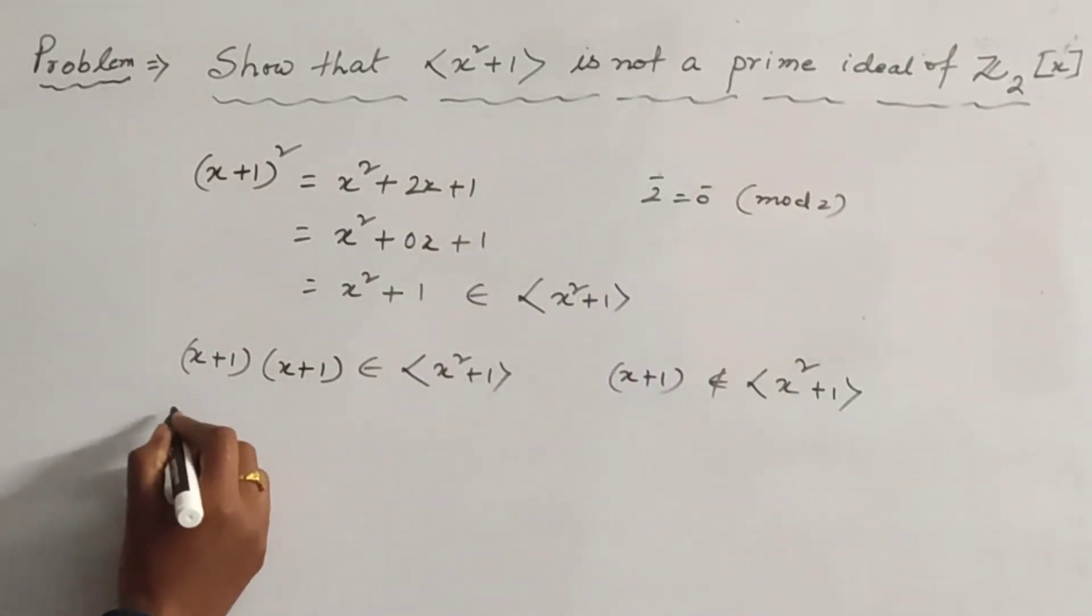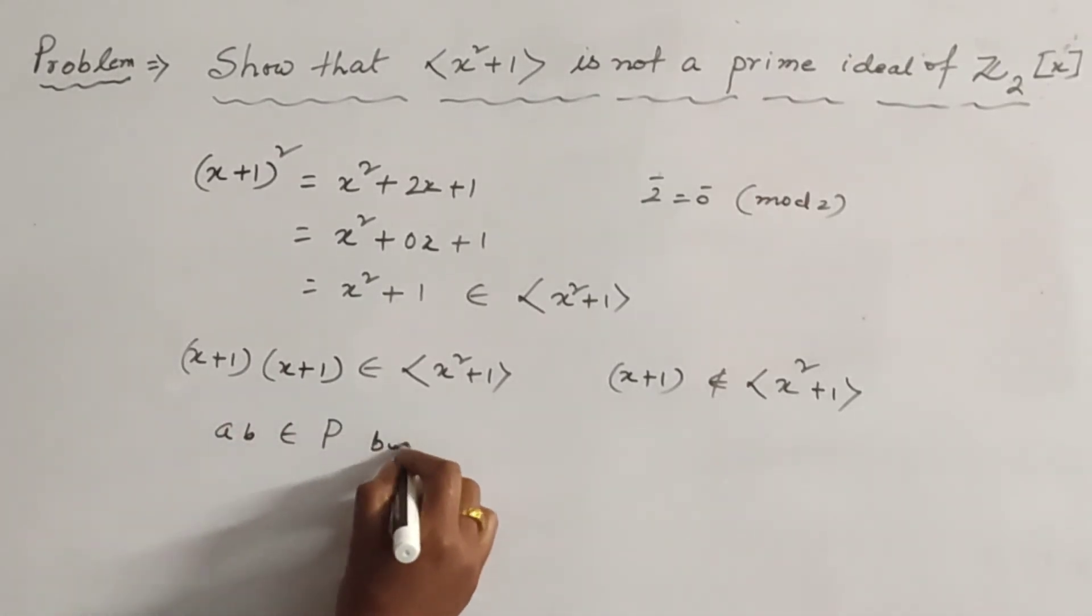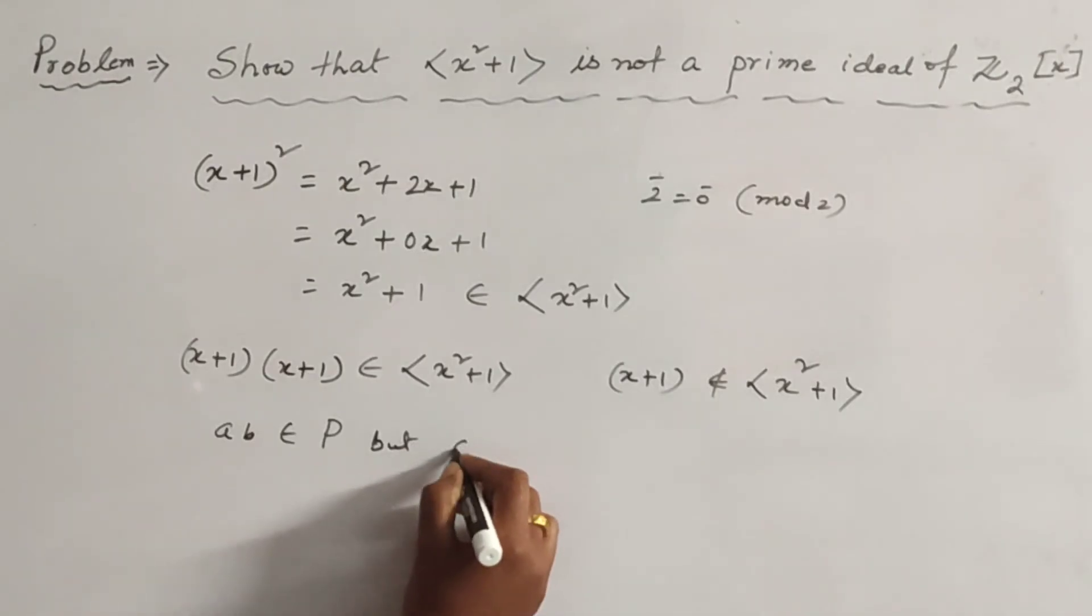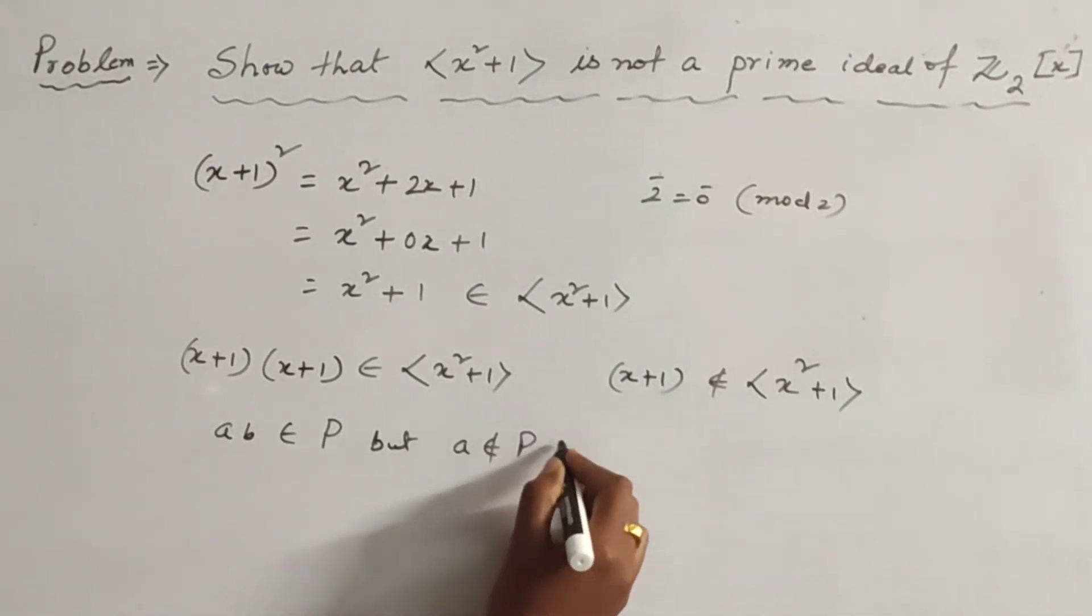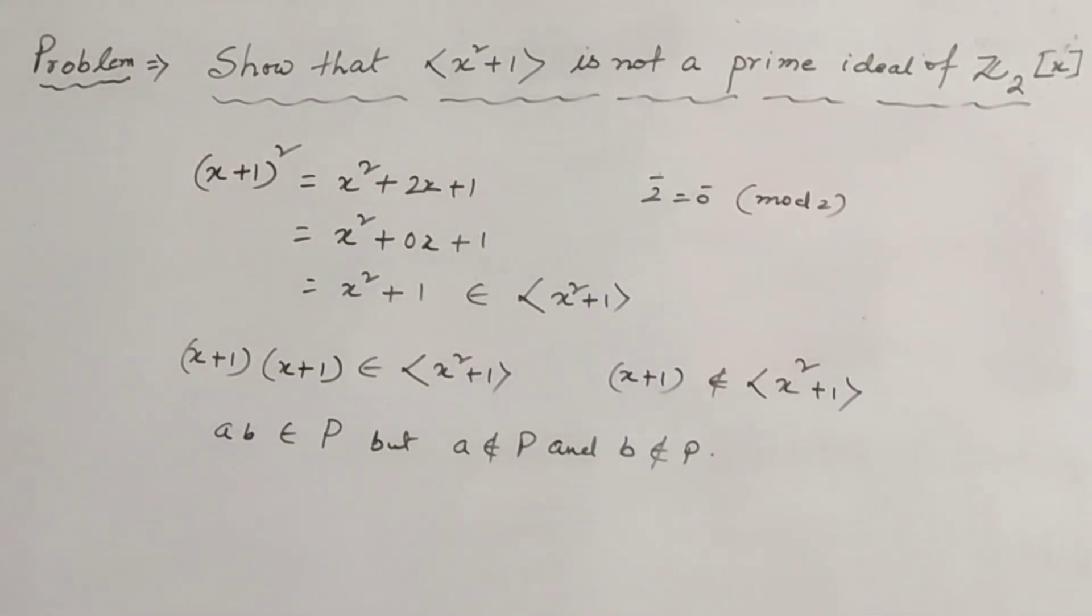So we get a·b belongs to P, but a does not belong to P and b does not belong to P. So this contradicts the definition of prime ideal.